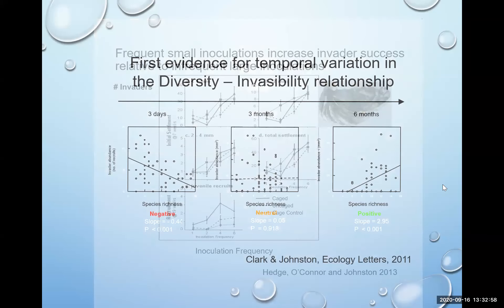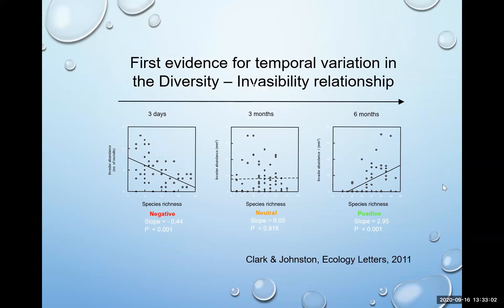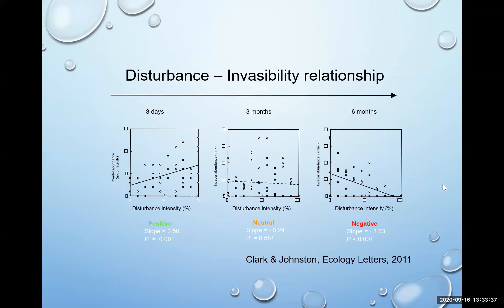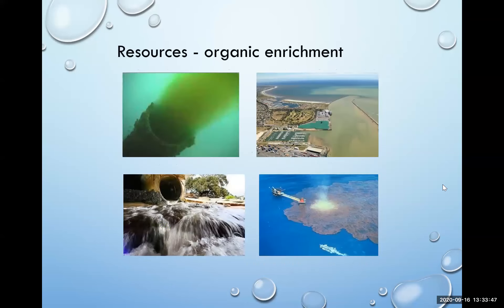We've also shown evidence for temporal variation in the diversity-invasibility relationship — that very famous one. We first showed that it existed and changed through time: three days post arrival of an invader, three months, and six months, you get very different relationships between species richness and invader success. But that was actually being driven by our manipulation of physical disturbance and its frequency and intensity. If you look at disturbance intensity, you see that the causal relationship is between disturbance intensity — which is simultaneously affecting the biodiversity of these ecosystems — and invasion success.